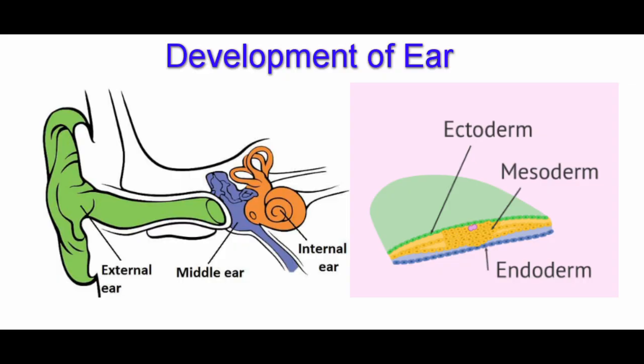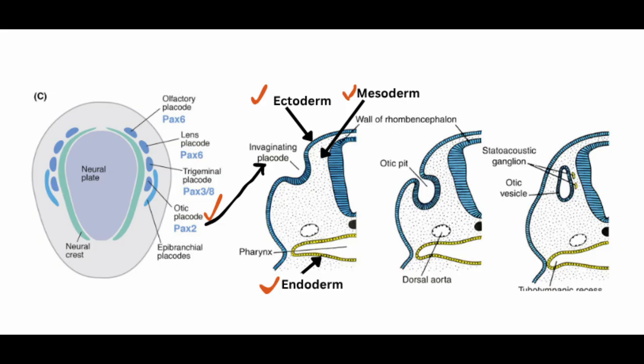The inner ear is the first of the three anatomical parts of the ear to form, starting from the third week of embryo development, when a thickening of the ectoderm called the otic placode is formed. Similar to the lens placode for the developing eye and the nasal placode for the future nose, the otic placode forms for the developing ear. All are ectodermal proliferations.